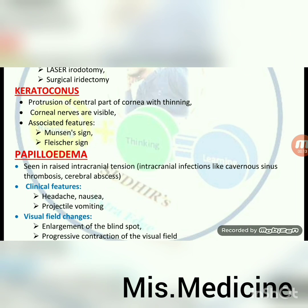Keratoconus: protrusion of centre part of cornea with thinning; corneal nerves are visible. Features: Munson's sign and Fleischer sign.